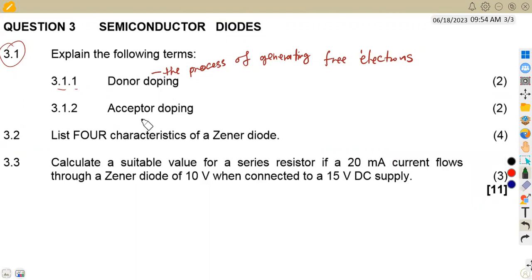Then we move on to the acceptor doping. That is the process of generating holes. So this time, we are talking about the process of generating holes in this case. That is acceptor doping.